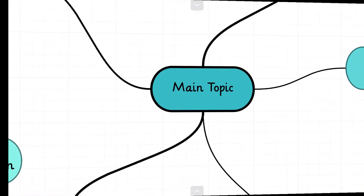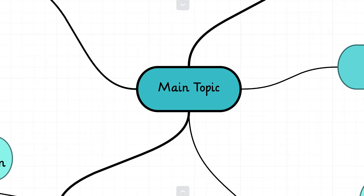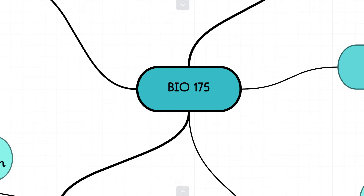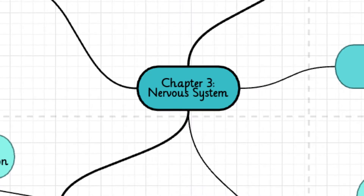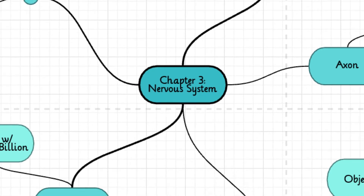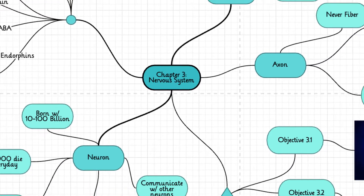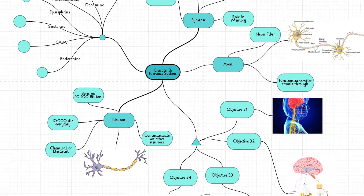We start by taking a main topic from which we'll branch off. And this can be anything — a question, a class, a name, an idea — whatever helps you get the ball going. From this topic, we expand out, building connections with whatever we associate with that topic.